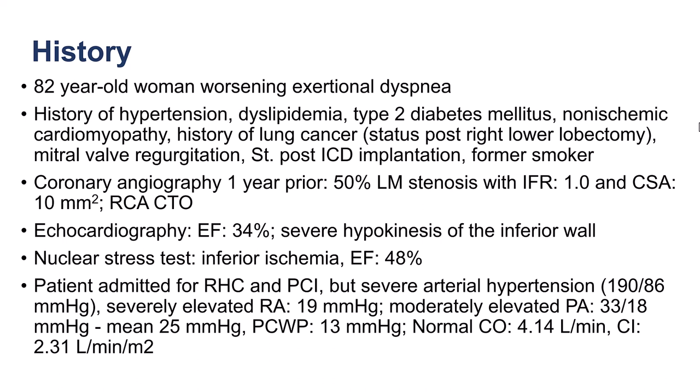The patient was an elderly woman who had multiple comorbidities and had previous ICD implantation and cardiomyopathy. In the past, she had intermediate left main stenosis with normal IFR. EF was 34%, and she was found to have inferior ischemia and was referred for PCI of a known CTO of the right coronary artery.